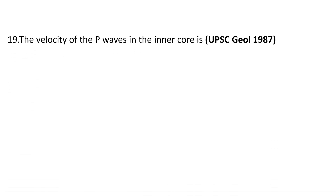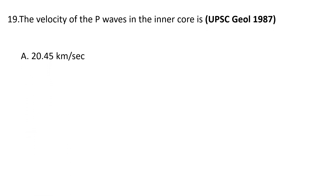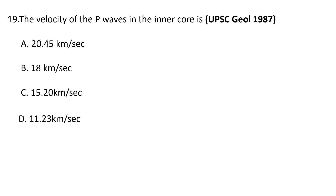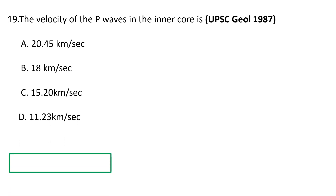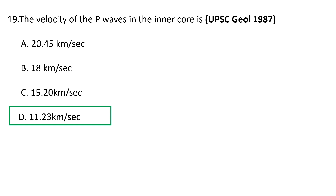Nineteenth question: the velocity of P waves in the inner core is — a) 20.45 kilometers per second, b) 18 kilometers per second, c) 15.2 kilometers per second, and d) 11.23 kilometers per second. The correct answer is d) 11.23 kilometers per second.